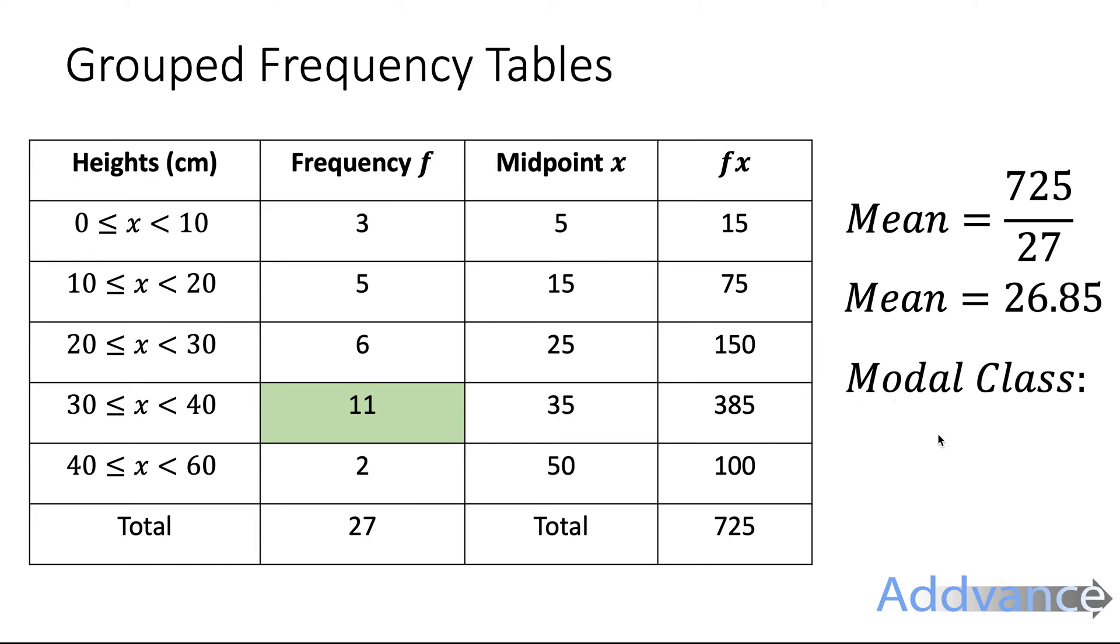Now we work at the modal class. This means the most common class like the mode. And that will be the class with the highest frequency which is here. 11 is the highest frequency, and that class is 30 is less than or equal to x is less than 40. So you're just choosing the class that is the most common.